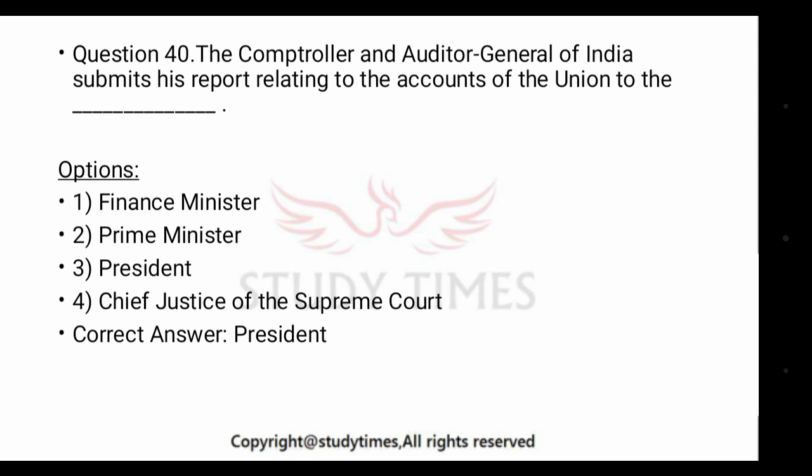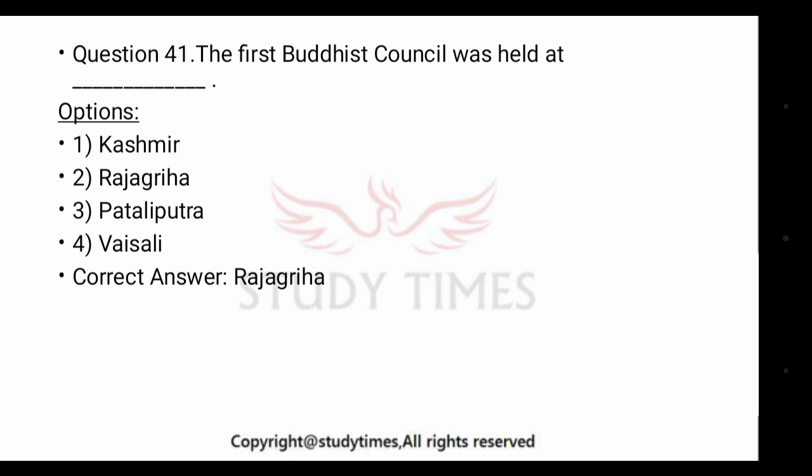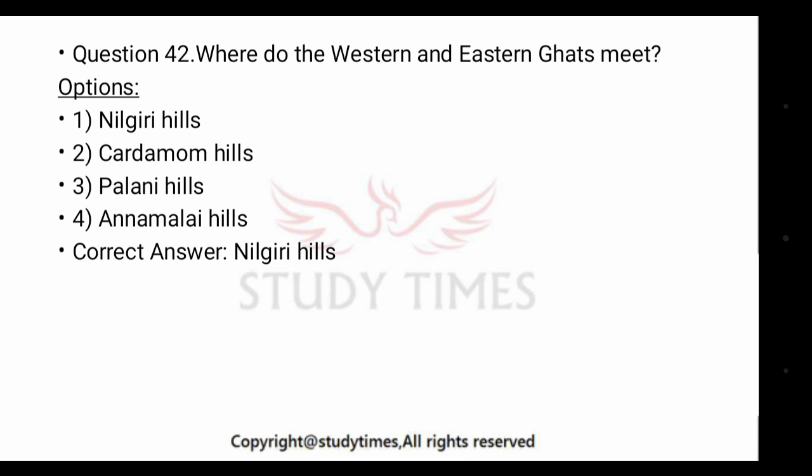The first Buddhist Council was held at dash — the answer is Rajgriha. Where do the Western and Eastern Ghats meet? The answer is the Nilgiris. There are also the Anamalai Hills, also known as Elephant Hills — this may also be asked in the exam.